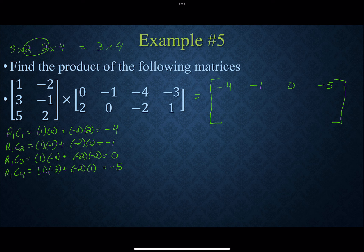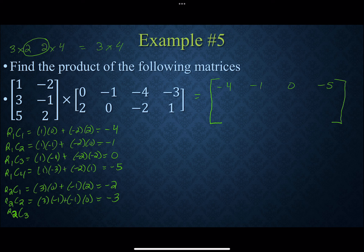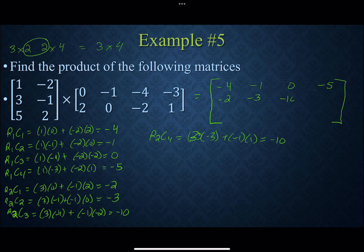Now the second row with each column. Row 2, column 1: 3 times 0 plus −1 times 2 = −2. Row 2, column 2: 3 times −1 plus −1 times 0 = −3. Row 2, column 3: 3 times −4 plus −1 times −2 = −10. Row 2, column 4: 3 times −3 plus −1 times 1 = −10. So the second row is: −2, −3, −10, −10.